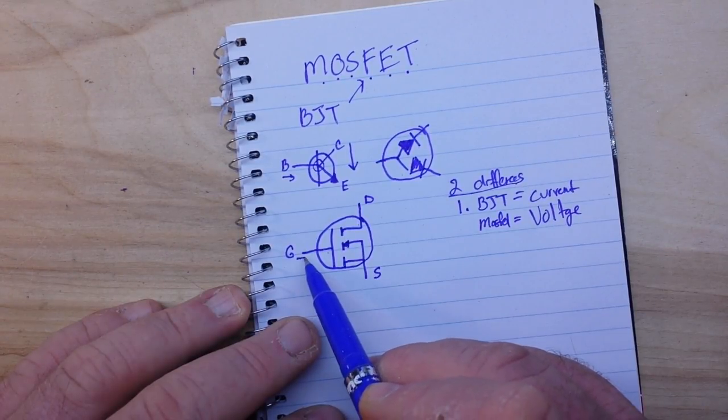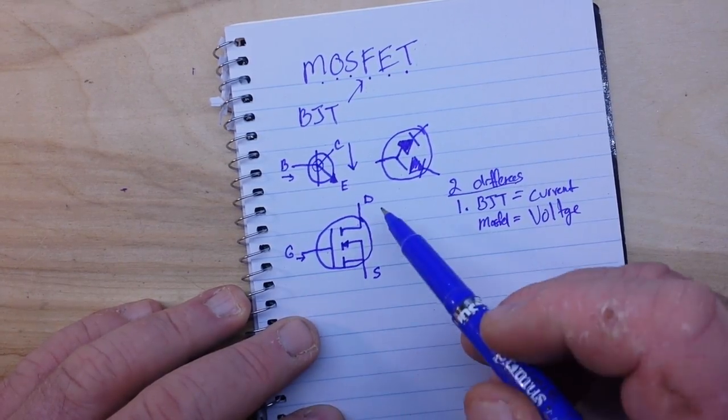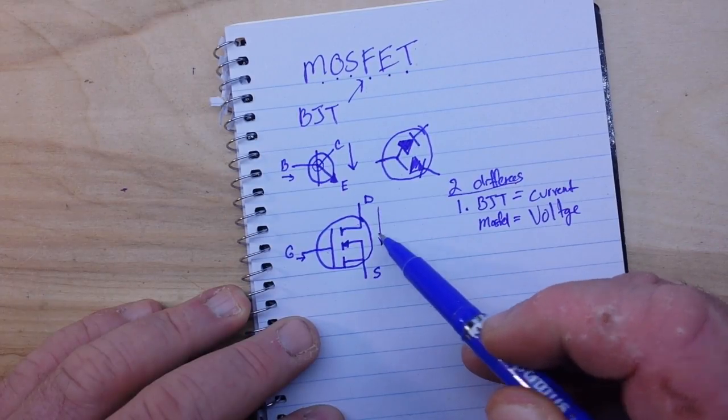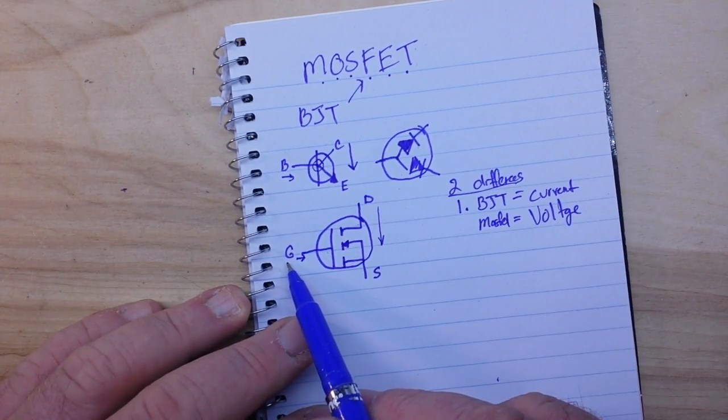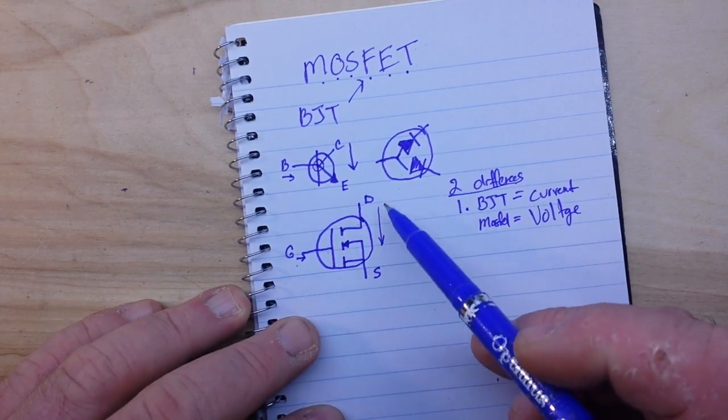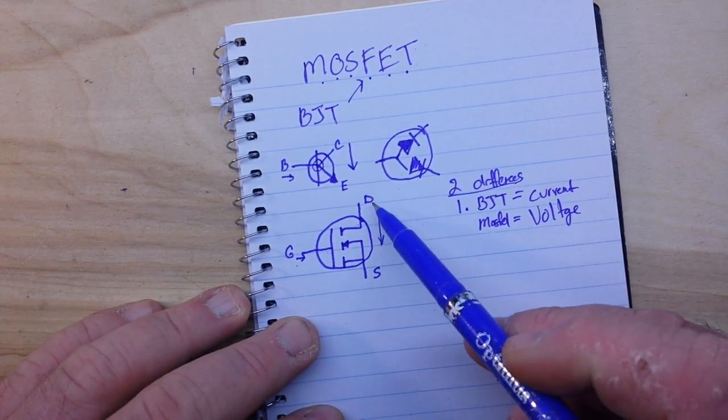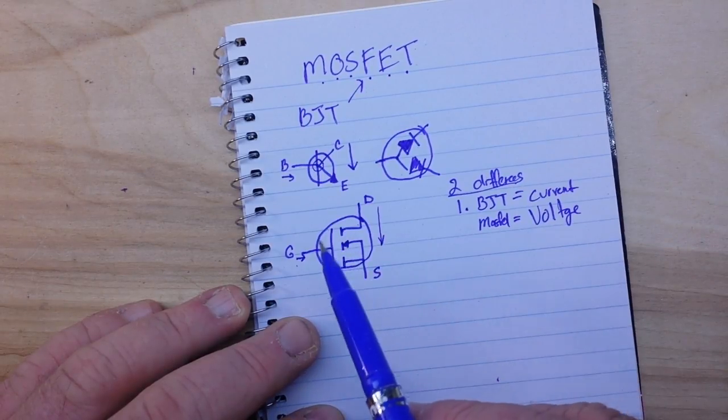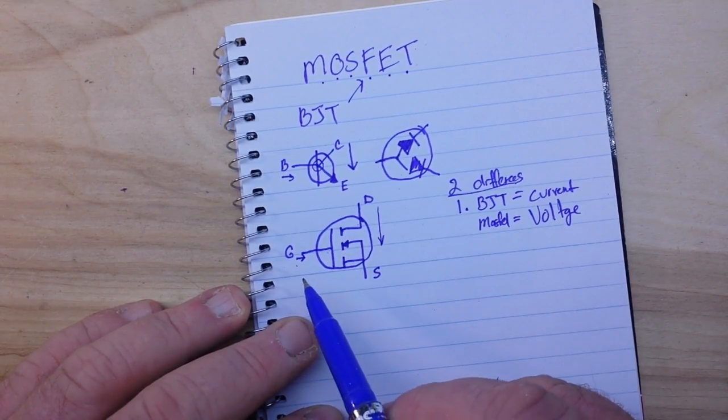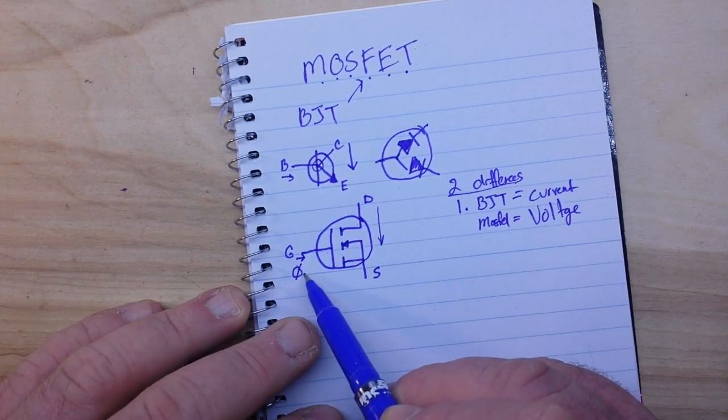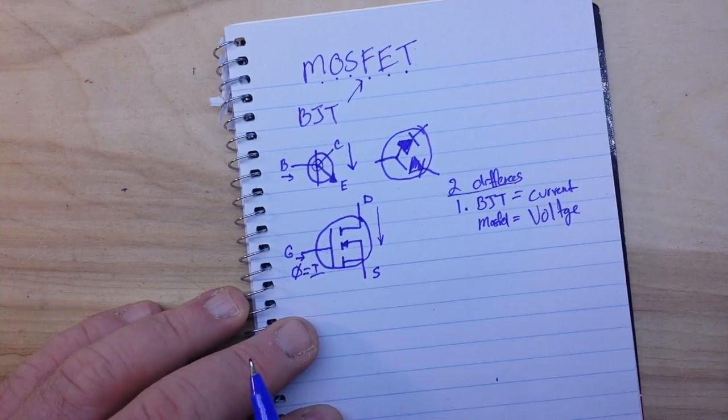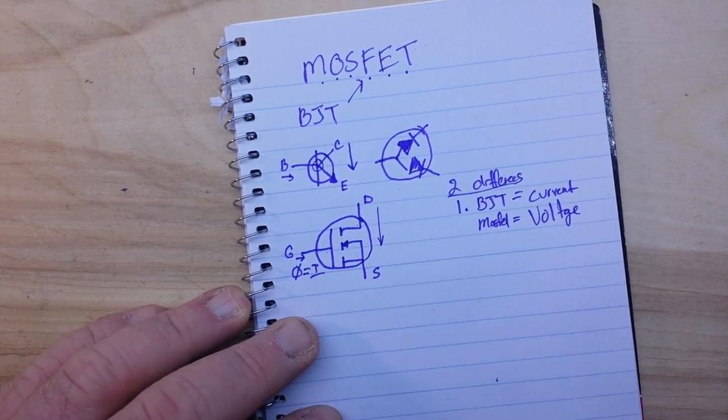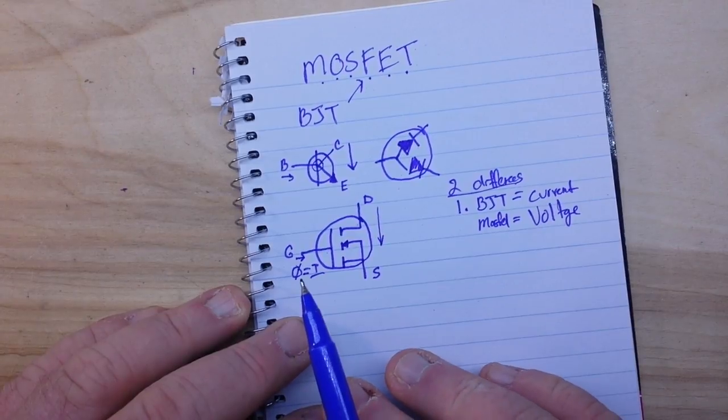A small voltage into the gate induces a larger flow of current from drain to source, and the MOSFET basically takes no current whatsoever to switch on, so it doesn't affect the current of the rest of the circuit.